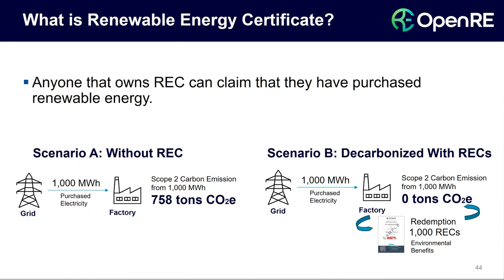When you sell a REC, someone else would have to buy it. Let's look at a scenario without REC: say you are a factory owner manufacturing plastics and you purchase 1,000 megawatt hours of electricity from TNB. In your Scope 2 carbon emission, it will reflect that you have generated 758 tons of carbon dioxide equivalent. To offset this emitted carbon to zero, here is where REC plays a very important role — you can buy and redeem 1,000 RECs to offset that 1,000 megawatt hours, and you end up with zero tons of carbon dioxide equivalent for your Scope 2 carbon emission.